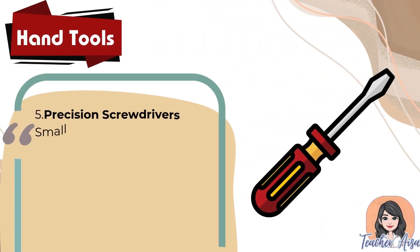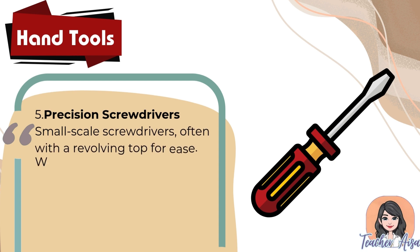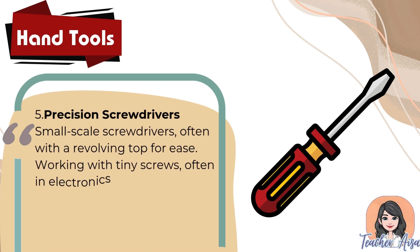Five: precision screwdrivers. These are small-scale screwdrivers, often with a revolving top for ease, used for working with tiny screws often found in electronics.